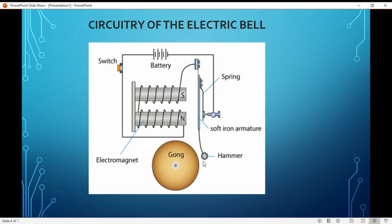At the same time, the hammer strikes the gong which produces a sound. At this point, the circuit is broken as the soft iron armature leaves its contact with the screw. This stops the current flow through the circuit which results in demagnetizing of the electromagnet.